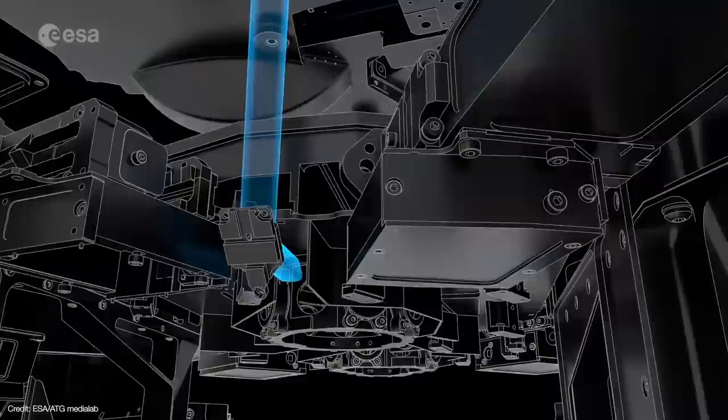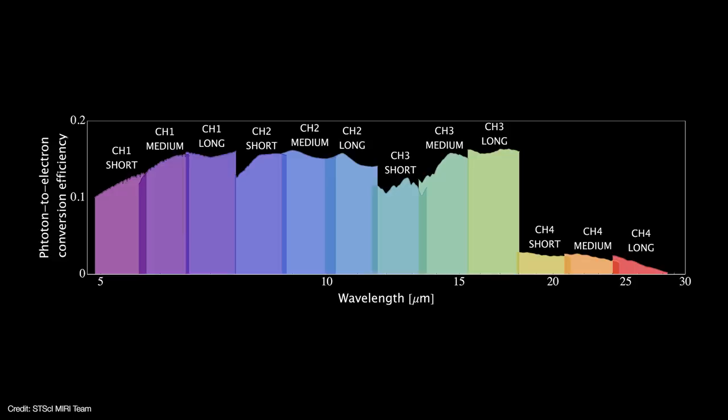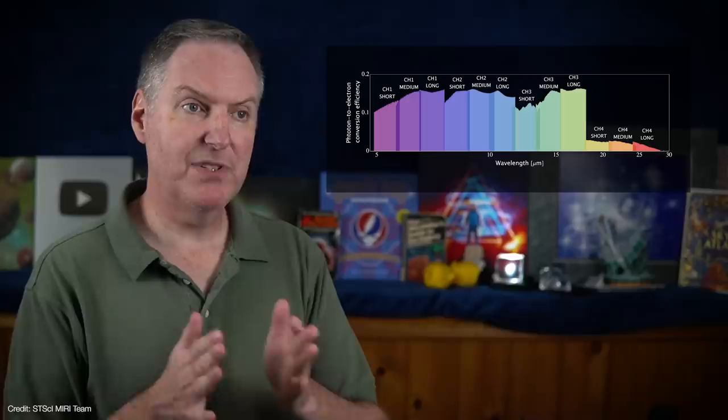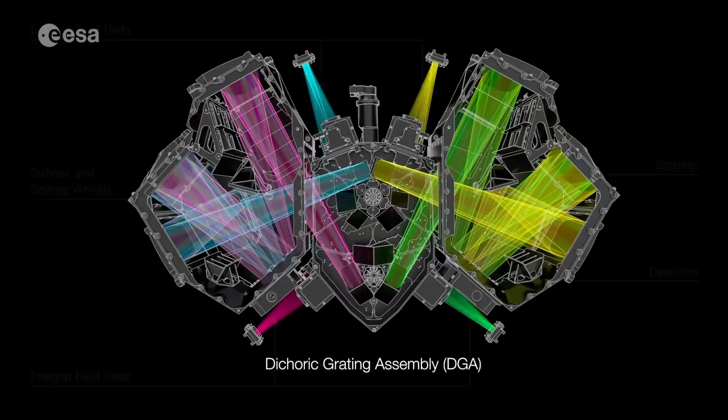So MIRI's designers came up with a clever idea. Each of the four subchannels was further divided into three subbands, covering the short, medium, and longer wavelength regions of each channel. So instead of taking one spectrum across the entirety of each of the four channels, MRS takes three separate spectra that fill in a portion of each channel's waveband. To do that, MIRI uses two wheels called dichoric grating assemblies, or DGAs.